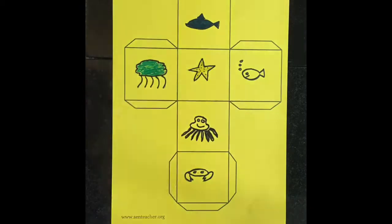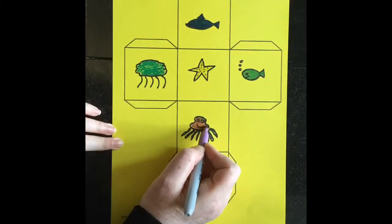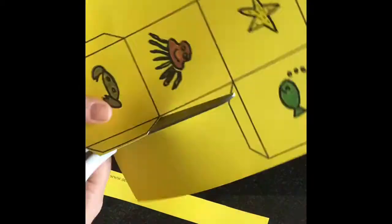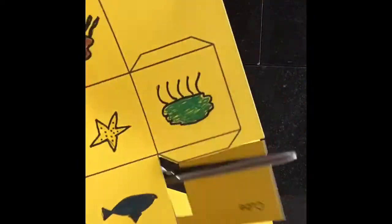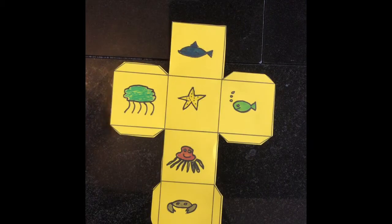Next, we cut out the cube, remembering to cut around all the different tabs. Now we're going to make some folds in the card where the solid lines are so we can start to construct our cube.